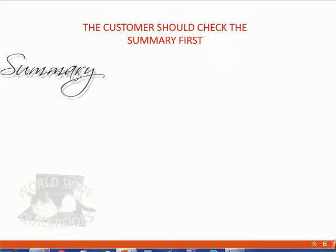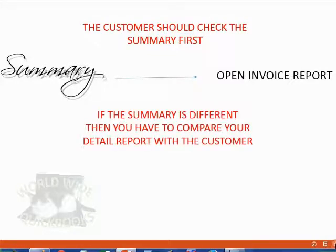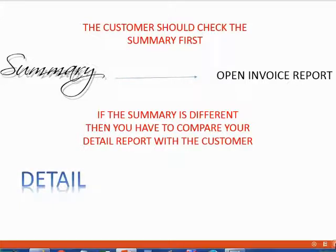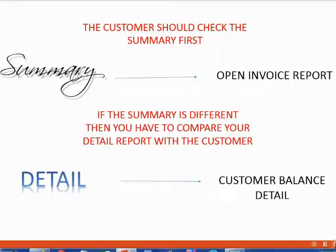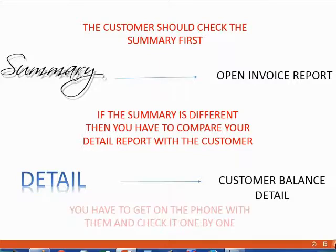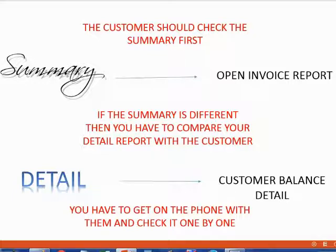The customer should check the summary first, meaning they will get a copy of our open invoice report as part of their statement. If the summary is different, then you have to compare the detail report with the customer. The detail report looks very much like the customer balance detail. So if something is wrong on the summary, the only way to find and fix what actually happened is to get on the phone with the customer and together check each transaction one by one.